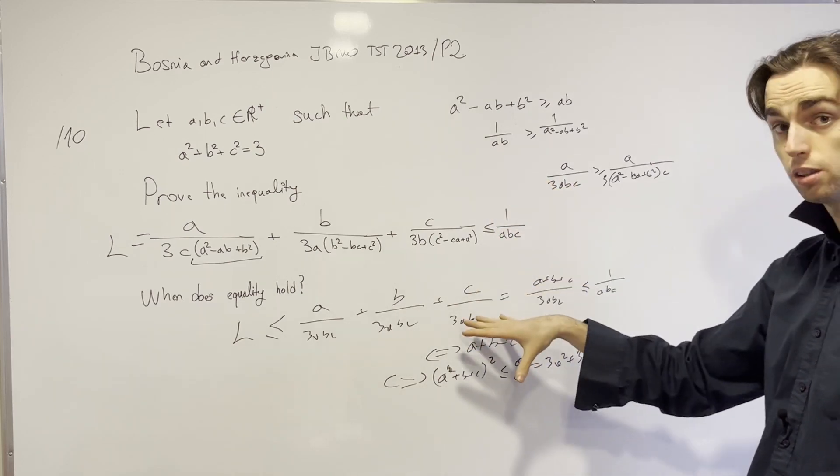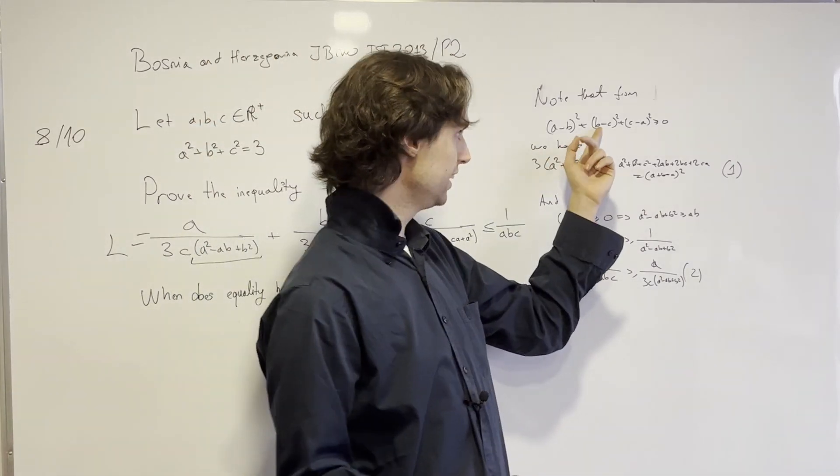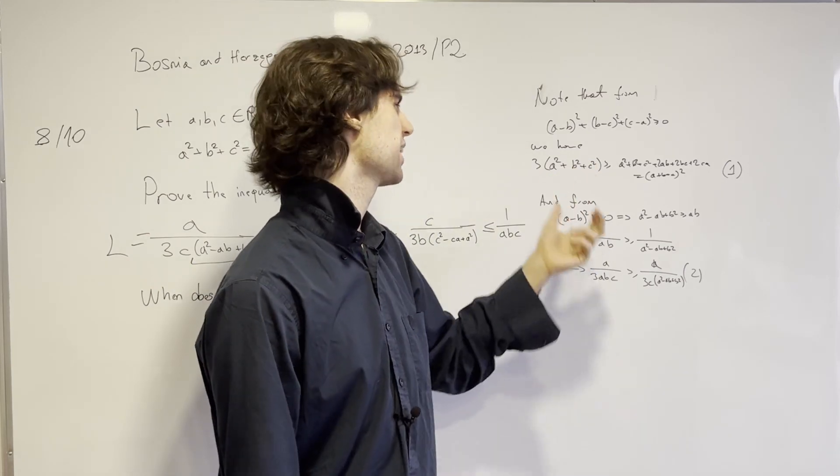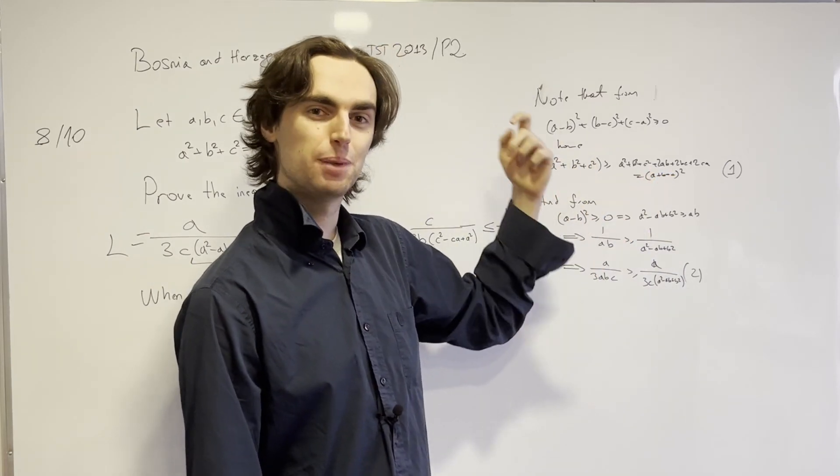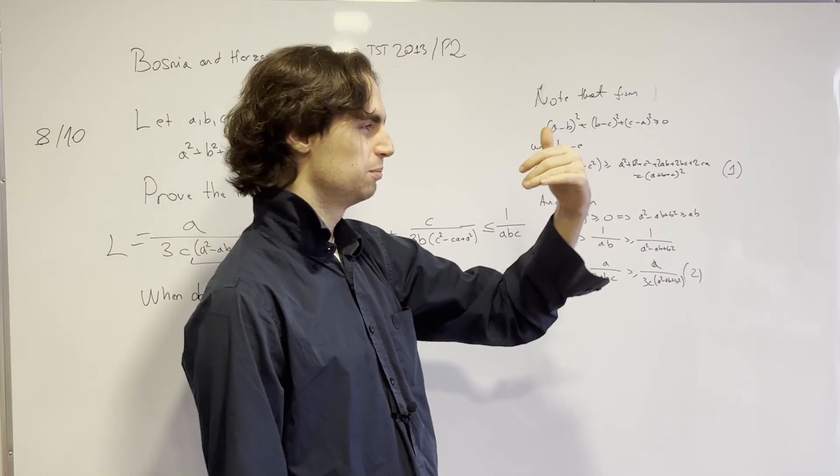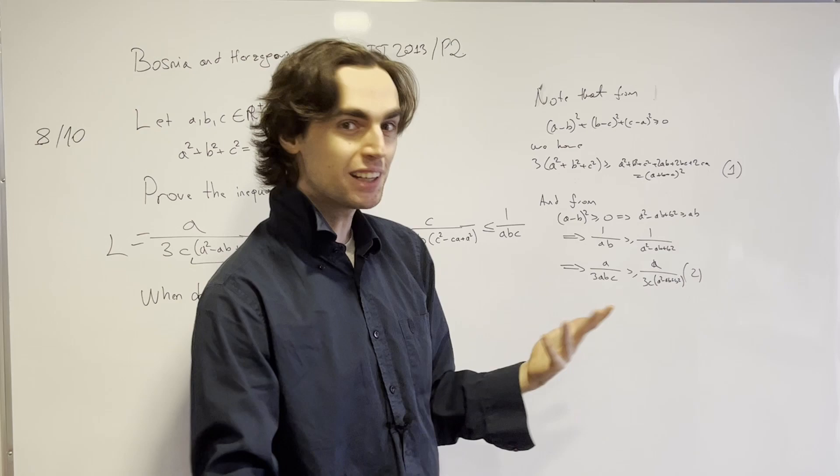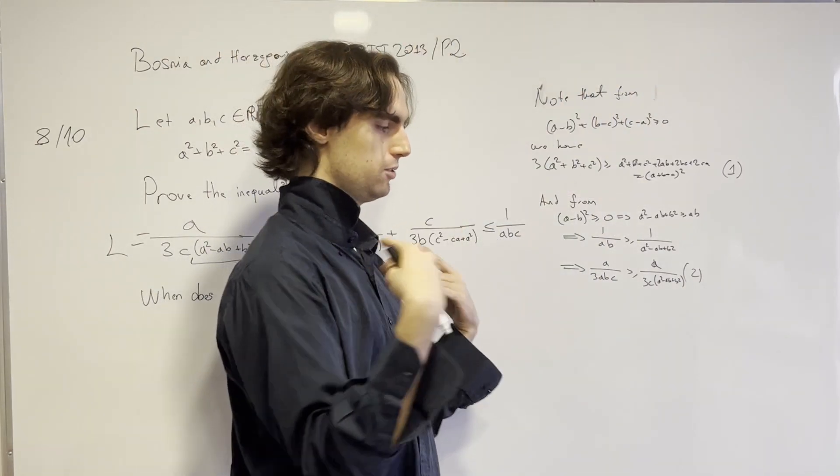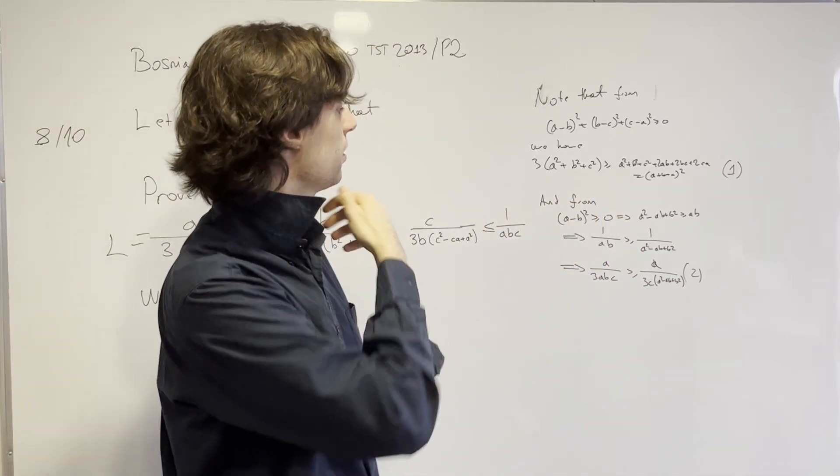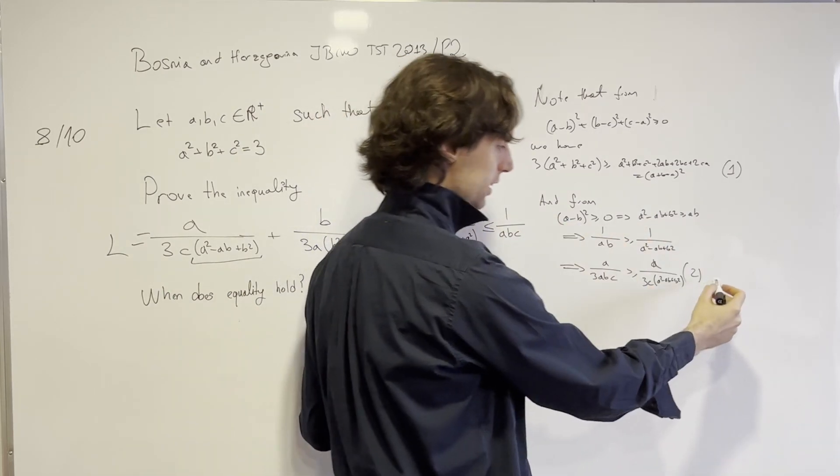So how we would write this down is, so the way we write this down is we first say, note that this from here we have this. Mind you, if you were reading this as a solution, you would be like, why are you even looking at this? But solutions are usually written with you knowing where the ending is. And then you just need to write the steps in the most concise way. Versus solving it is all over the place. Right? You're sort of like, I'll try this, and I'll try that. Here we tried the thing which ended up working.